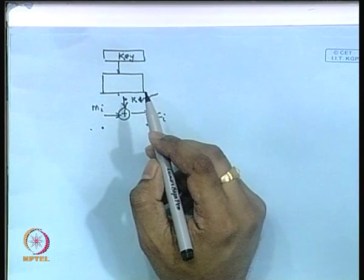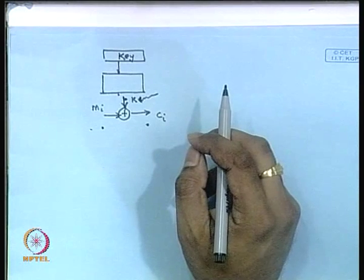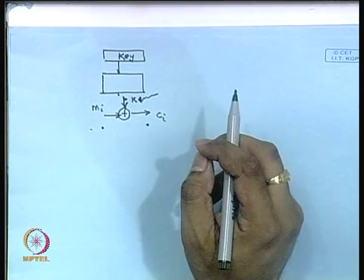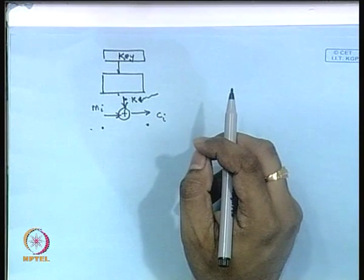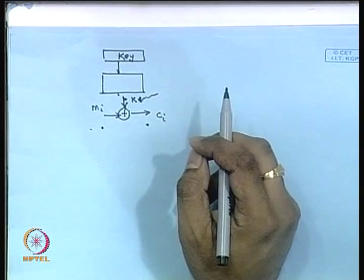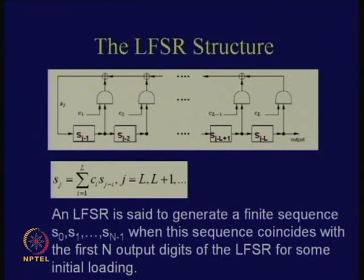How many secret values are there? For an n-stage LFSR, there are actually 2n secrets, because you do not know the initial seed — that gives you n bits — you also do not know the corresponding connection polynomial, and another thing you do not know is the length of the LFSR. So you can write them as a system of linear equations and solve them, but this is an unwieldy process, and the Berlekamp-Massey algorithm gives a very simple and elegant technique to solve this.